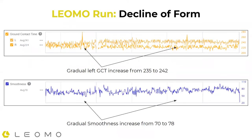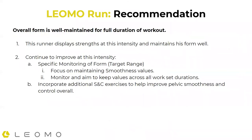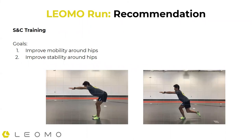For the decline of form on runner three: we observe changes in ground contact time, especially the left side increasing from 235 to 242 milliseconds, and smoothness showing a very gradual increase from 70 to 78 — not a big change, but the actual value being a little high is the main concern. Overall, this runner's form is actually pretty well maintained — that's probably why he is an Olympic-level marathoner. There are still things to focus on: keeping that left leg monitored, reinforcing good movement patterns on the left side especially in retraining from time off, and incorporating S&C exercises to help with pelvic movement, opening up the hips, and working on pelvic stability.